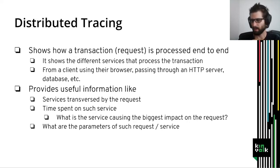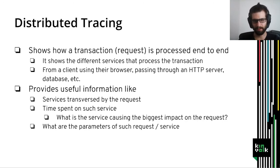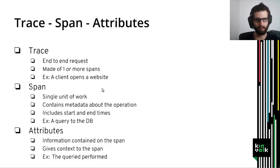Distributed tracing gives information about what are the different services traversed by the request — for instance the HTTP server, the database, an authentication service. We get information about the time spent on each service, so we can see what service is causing the biggest impact on the time required to process the request. We also have information about the parameters of specific requests, such as the URL, the query sent to the DB, and the parameters of the service processing the request.